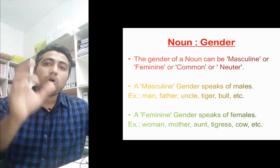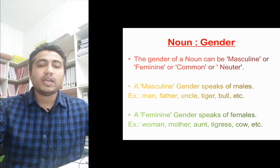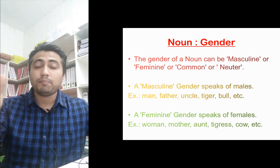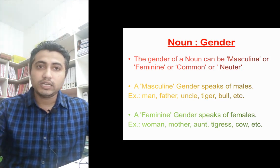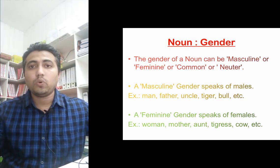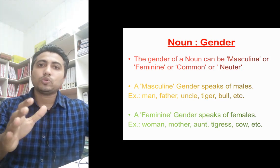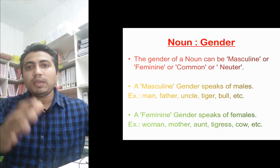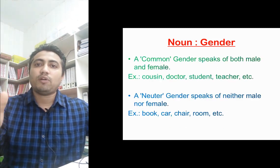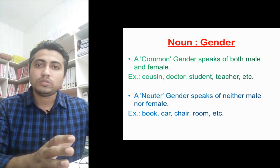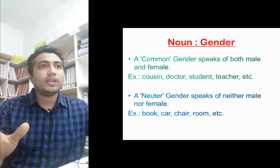The next one is feminine gender. Feminine gender refers to those nouns which belong to the female category. For example, woman, mother, aunt, tigress, cow, etc. All these belong to the female category and that is why the gender of all these nouns is feminine.